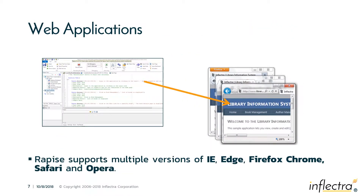When it comes to web applications, RAPEES has very strong support for different kinds of browsers. It can record and play actions in IE, Firefox, and Chrome, and can also play back tests in Microsoft Edge, Safari on Apple, and the Opera browser. It also supports various cloud-based networks such as Sauce Labs, Kobaton, and BrowserStack.